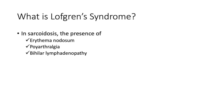What is Löfgren syndrome? It refers to a very specific entity within sarcoidosis: the presence of three things — erythema nodosum, polyarthralgia, and bilateral hilar lymphadenopathy. This constellation is so specific for sarcoidosis that you don't even require a biopsy to confirm the diagnosis.